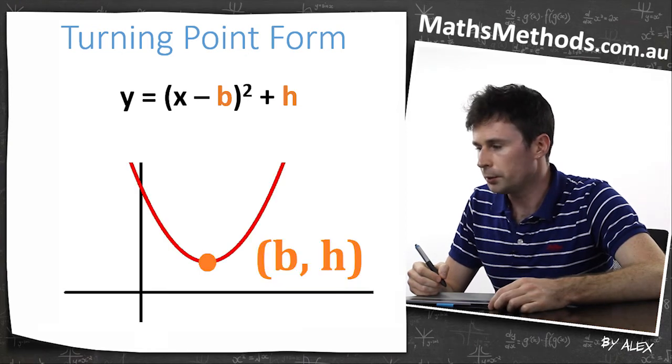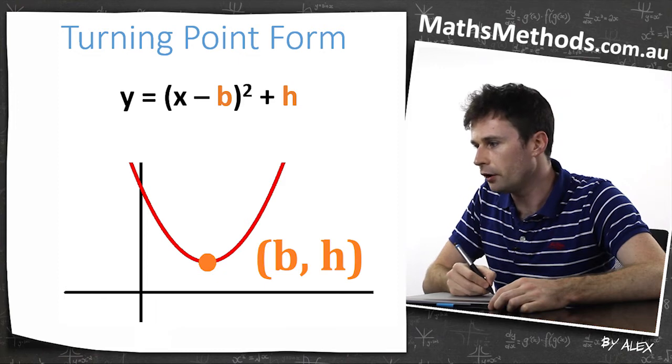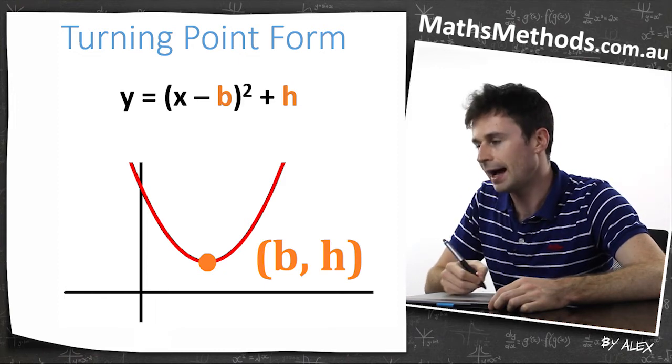If you've got a turning point form, we know that the turning point is going to be (b, h). Even though the b is negative, we actually make that a positive so it's going to be (b, h).